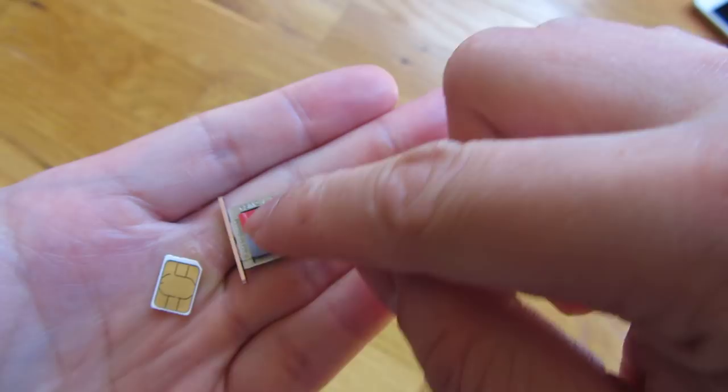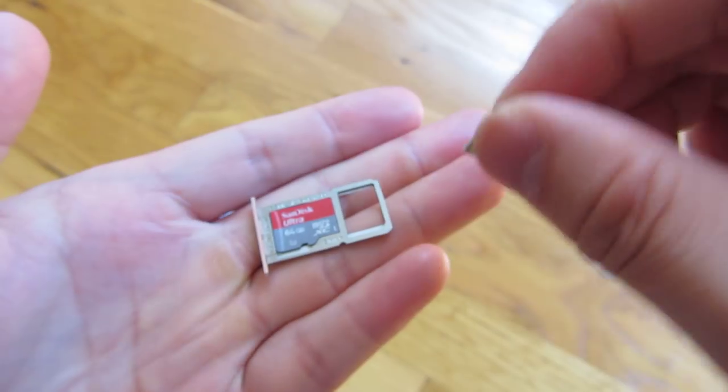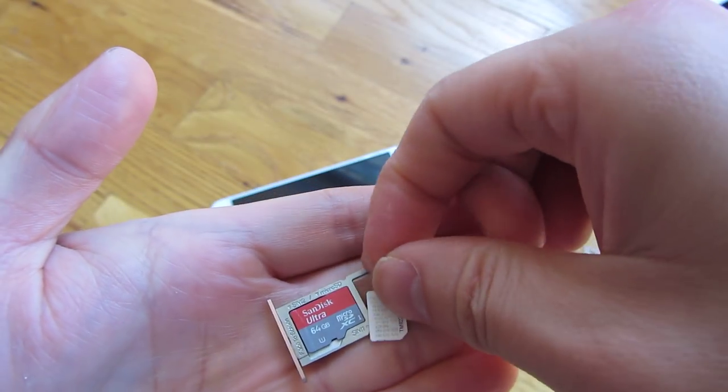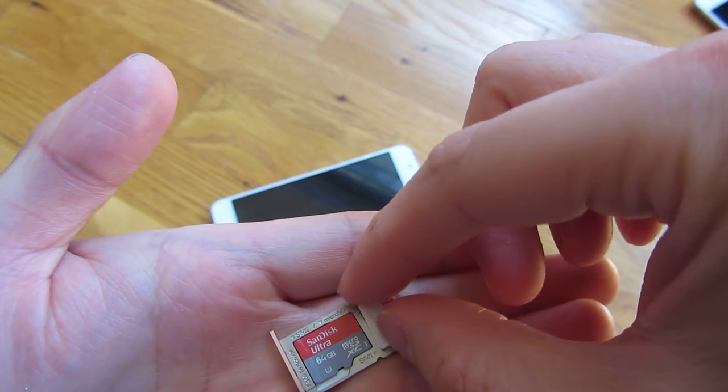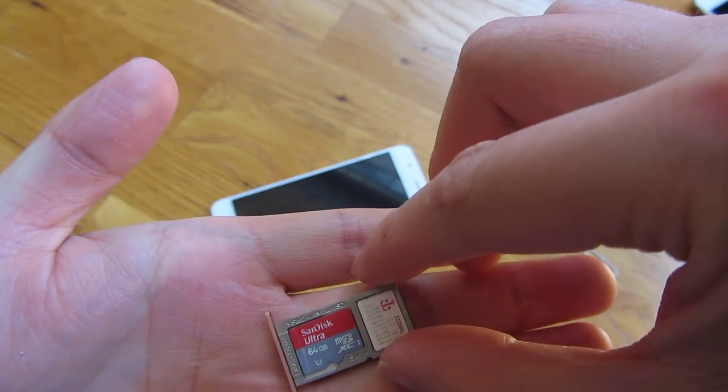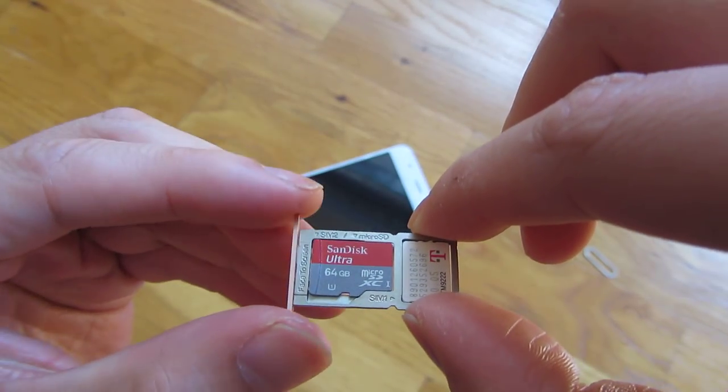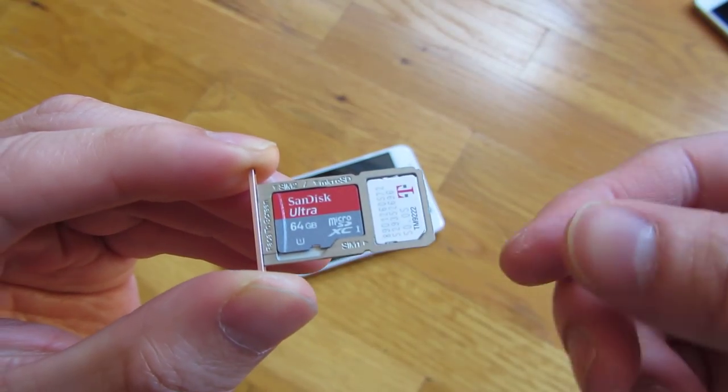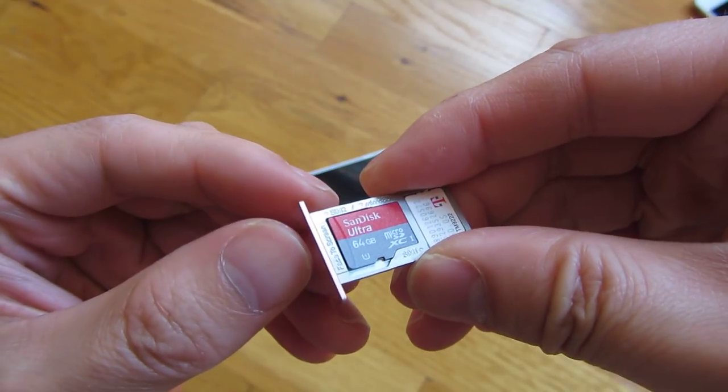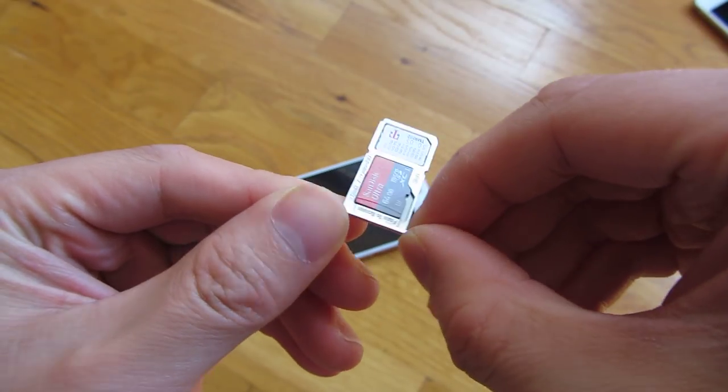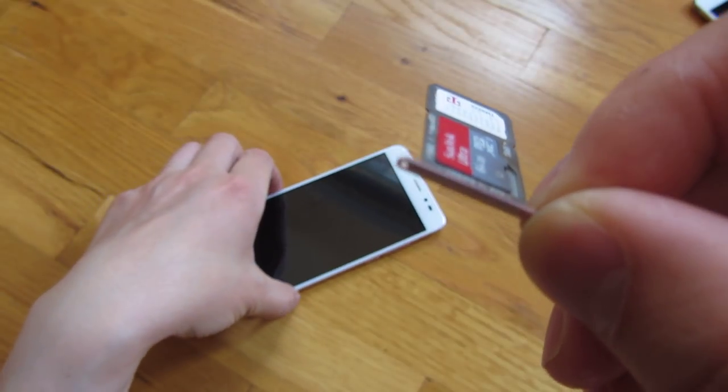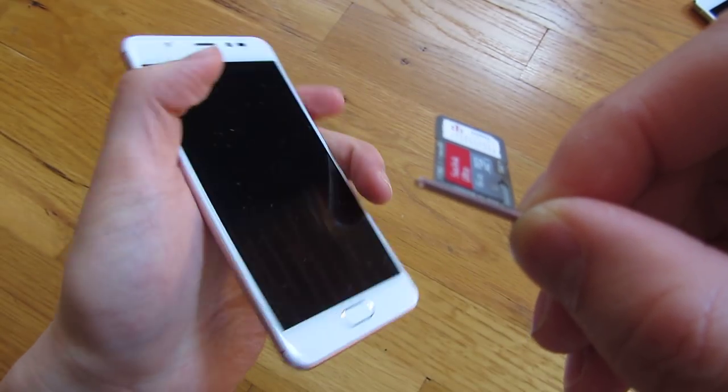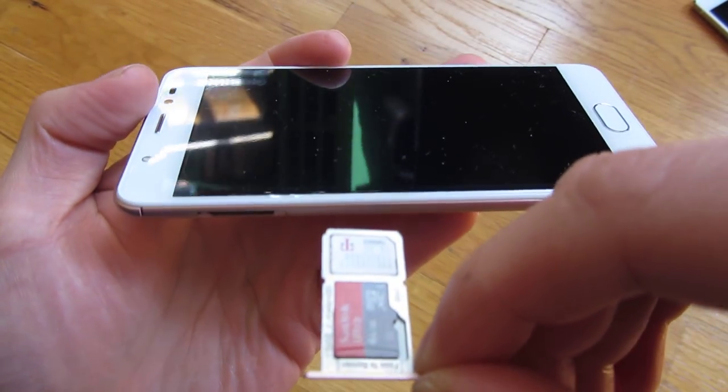So really the most realistic configuration is putting in the SD card and also putting in the micro SIM in such configuration like so, and then slowly putting it in. So keep in mind that that dot at the top goes at the top, so it slides in like this.